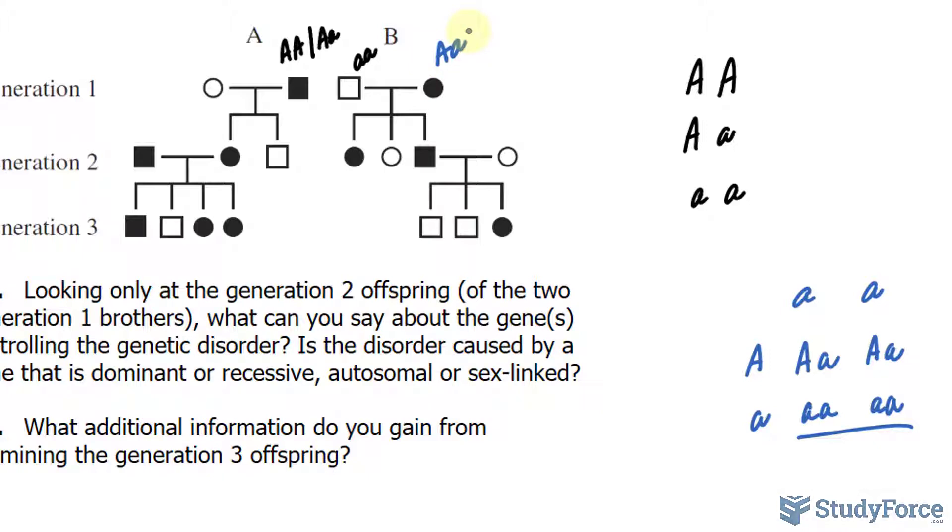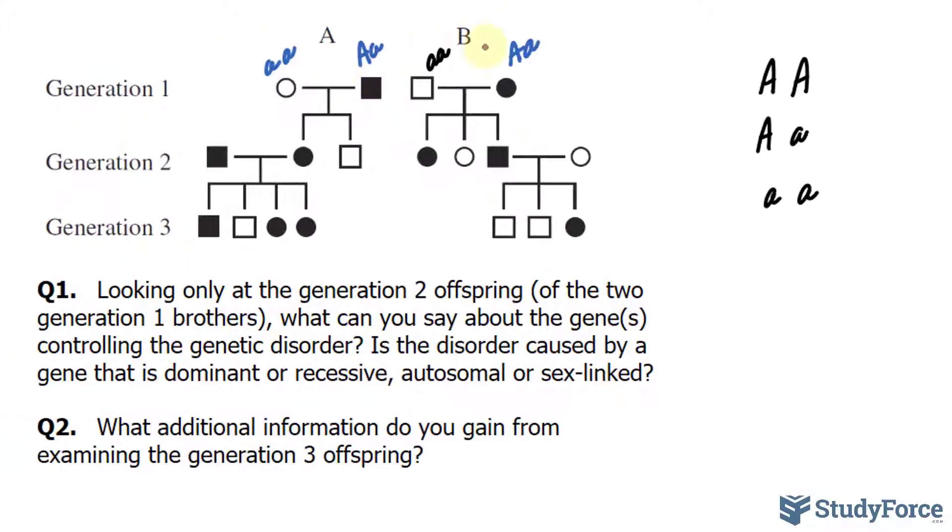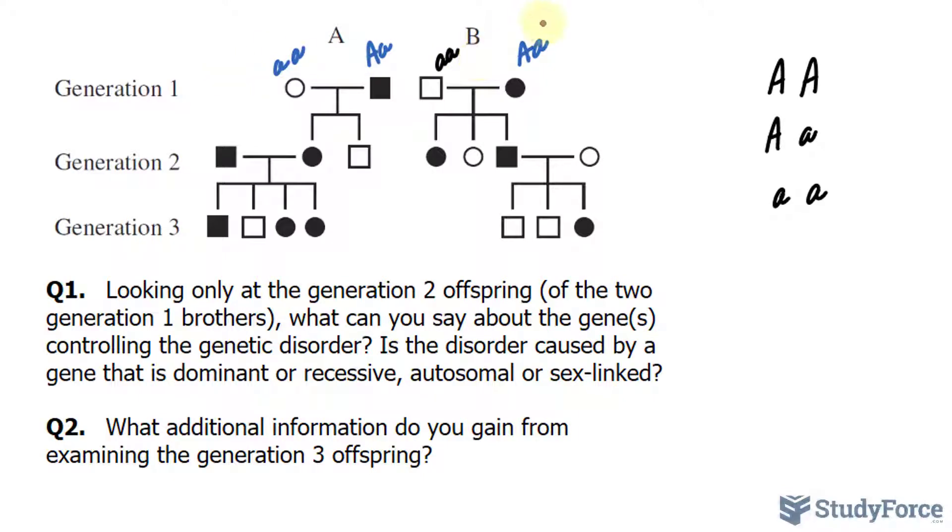Now what about this woman right here? Given our initial assumption, she has to be little a little a. And this brother, in order for him to have a child that is healthy, has to be heterozygous. Otherwise, their offspring would all have it if he was homozygous dominant. These are the genotypes of the parents in generation one.